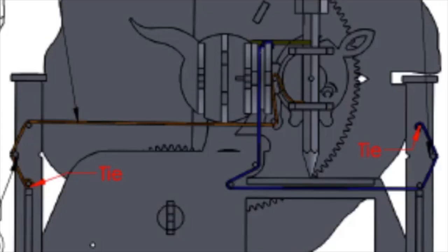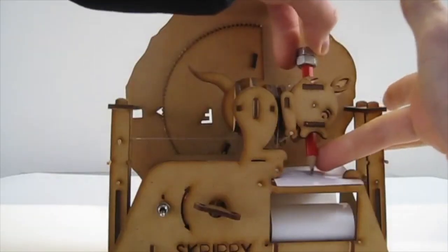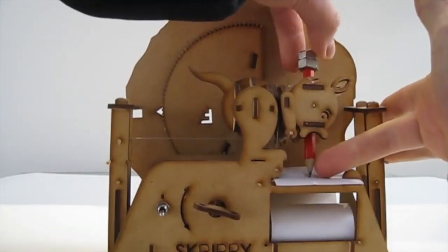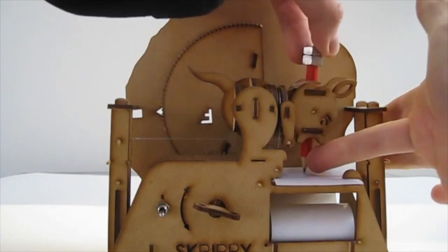That means when I pull the string a certain distance, I'll always get the same amount of rotation of the head. There's one string on the nod your head yes axis, and another string on the shake your head no axis.